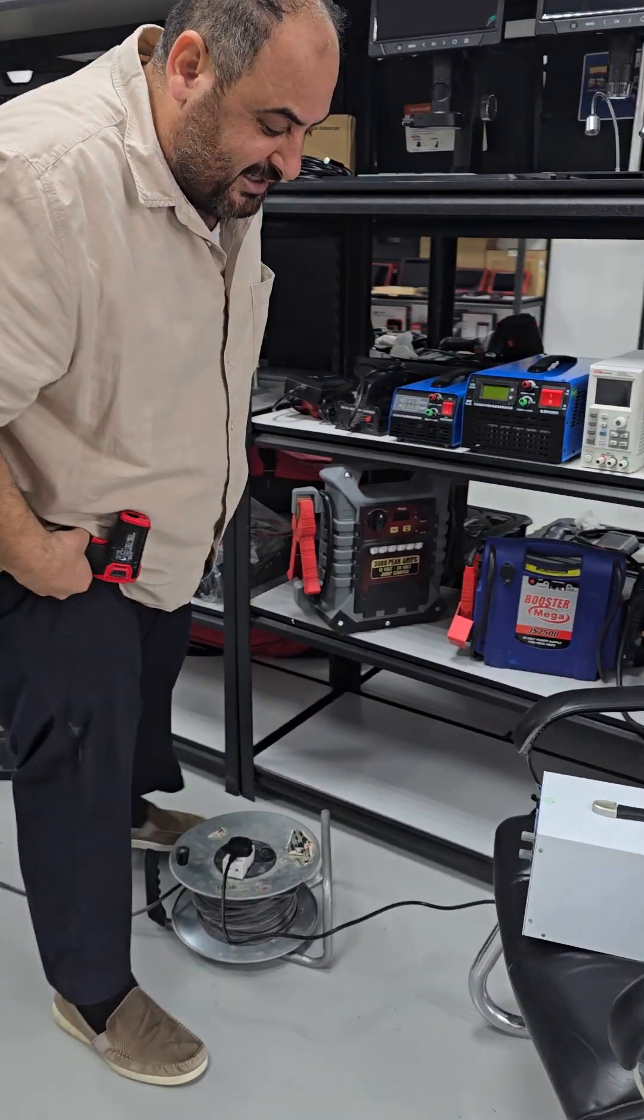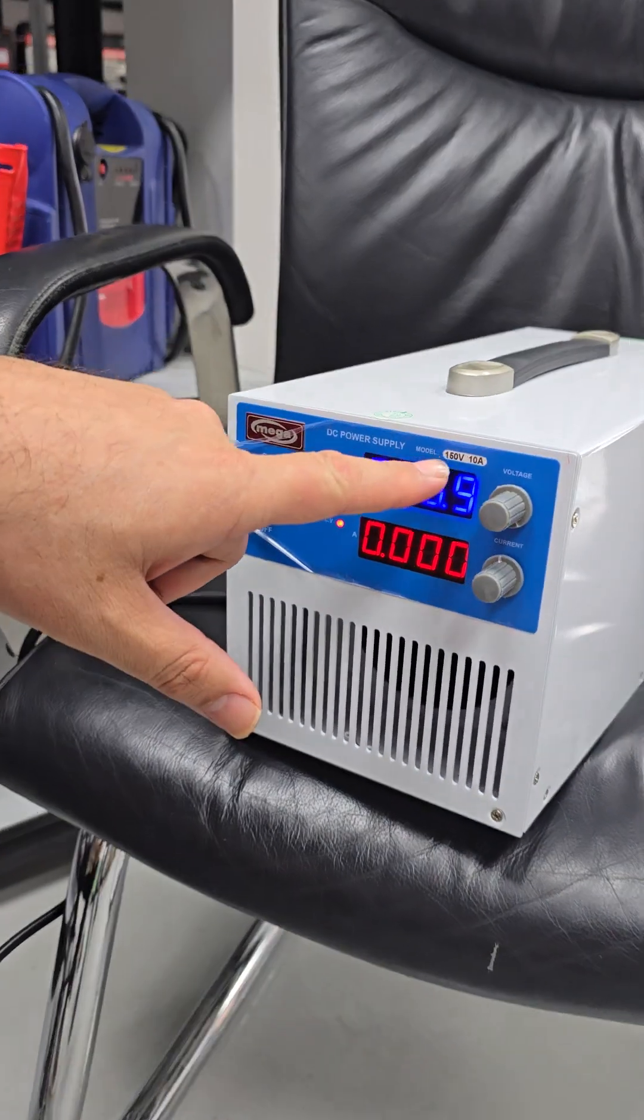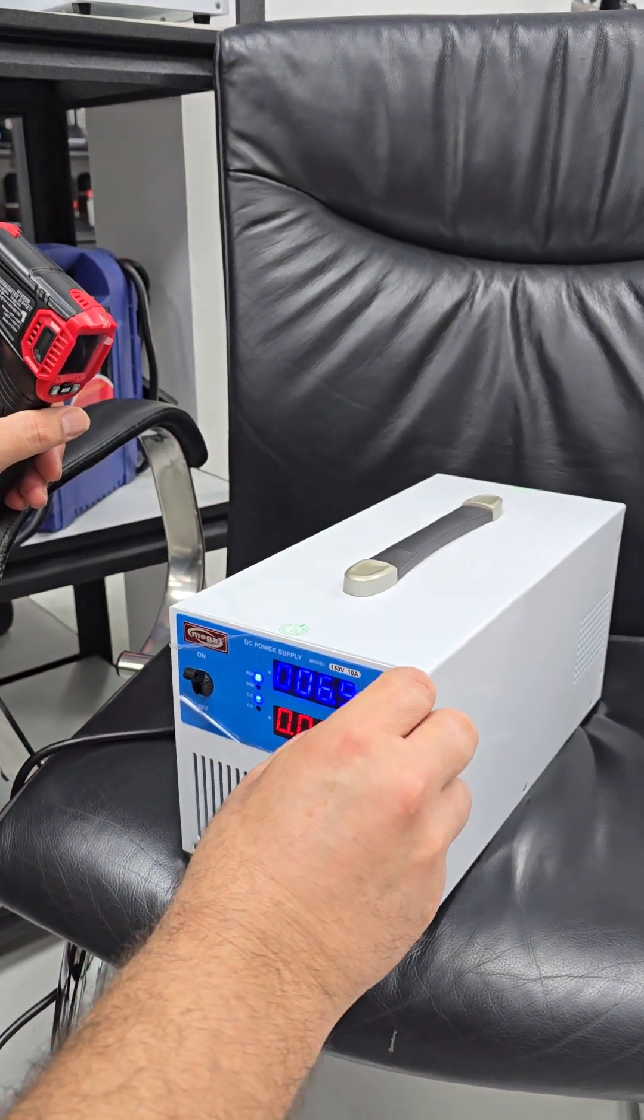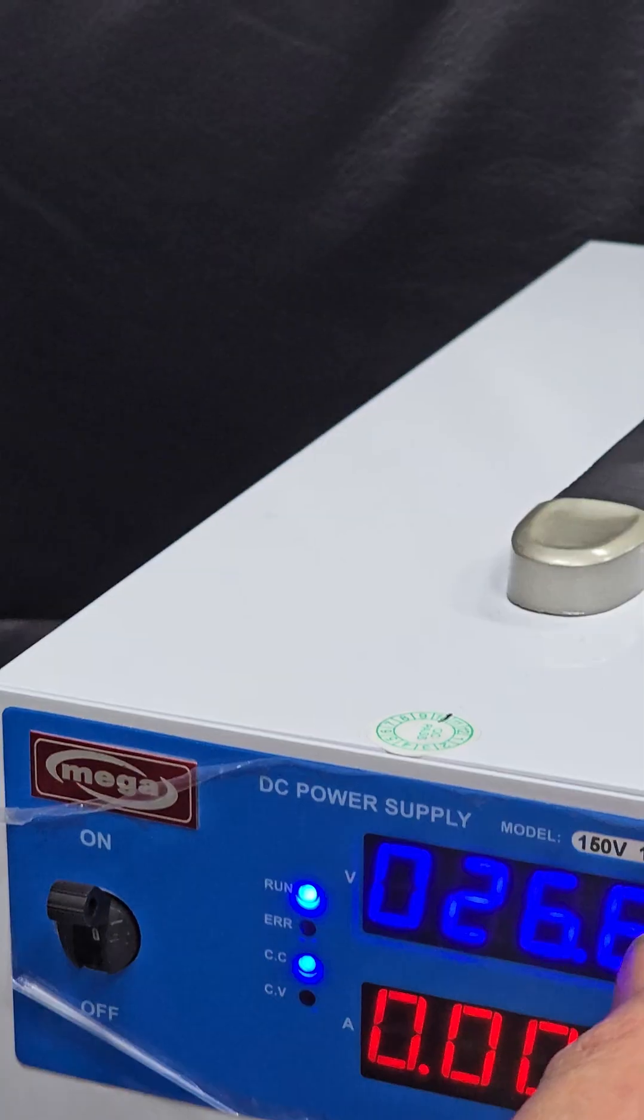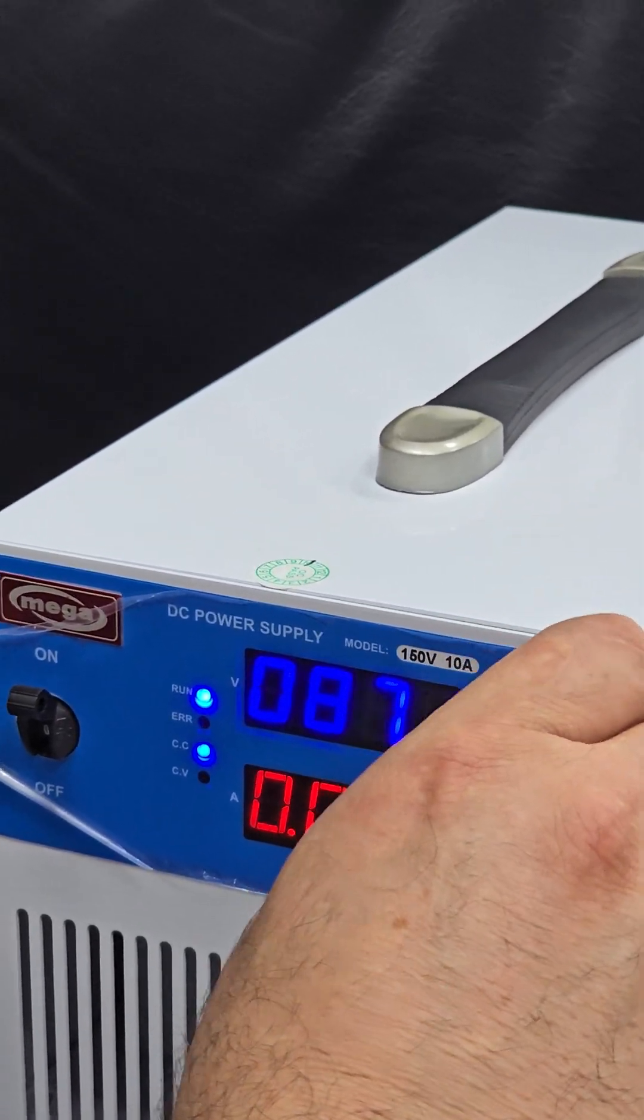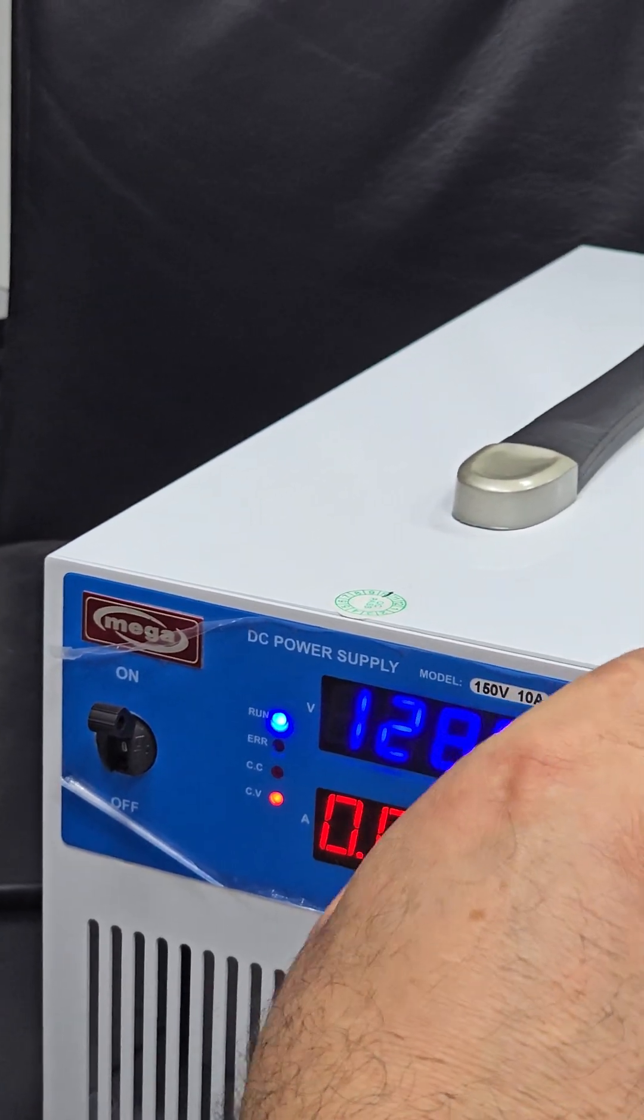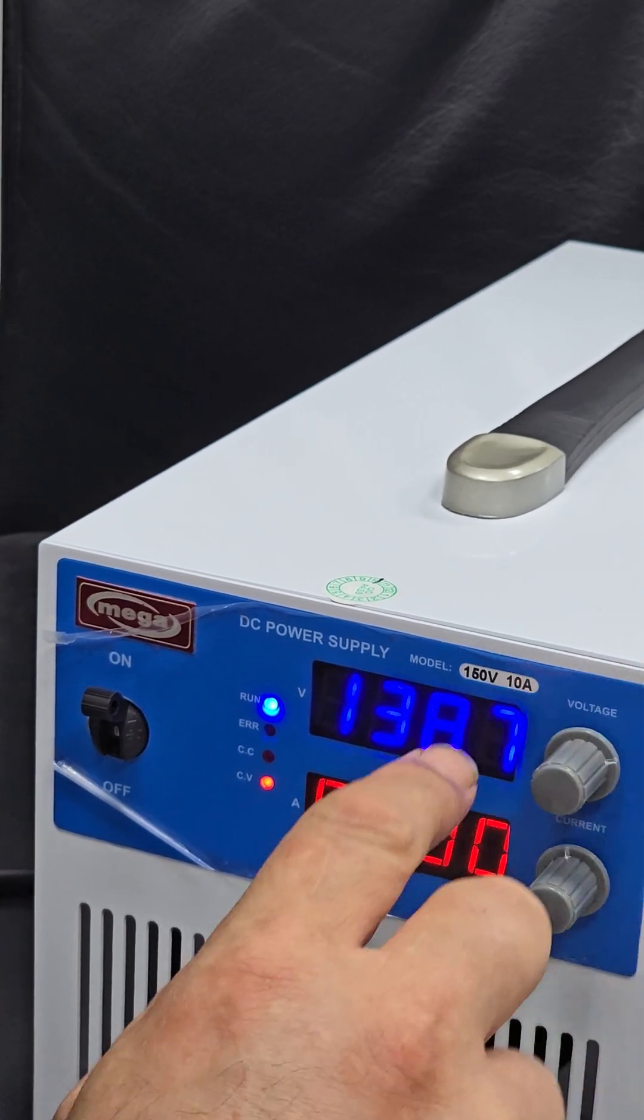Let me show you this device. This is a DC power supply that is up to 150 volt because the hybrid battery is 140 volt. So you can set this power supply, you can set it to start with 140. See, it's very accurate.